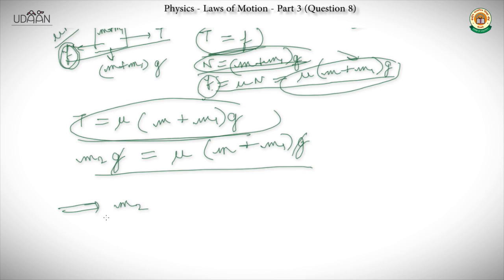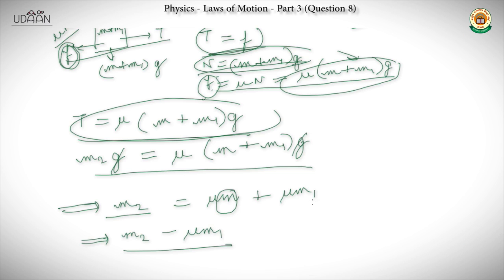We need to find the value of m — the additional mass. Rearranging: M = M2/μ − M1. If we have μ, M1, and M2 values given in the question, we can solve for M.